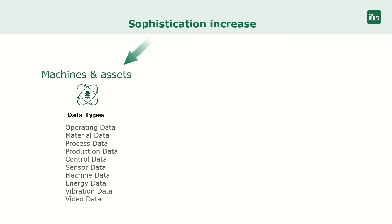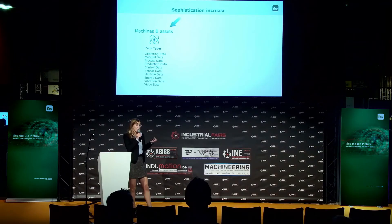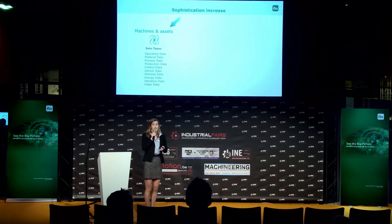The four industrial revolutions have led to a sophistication increase of two categories. First of all, there was a sophistication increase of the machines and the assets. We do not only have more machines than ever before, we also have more data than before. This is data of various data types — for example, data about the state of the machines, about the material being used, about the product we are producing. Sometimes even combined with data from MES systems like order numbers, batch numbers, and so on.